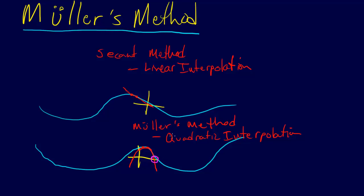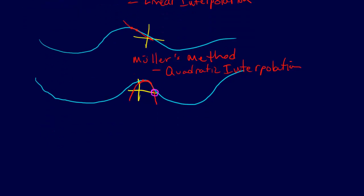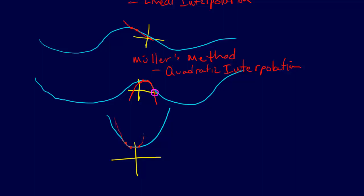So this is Mueller's method, and there's one more thing to emphasize. Let's say we're using Mueller's method and we have some equation here that we're solving, and it looks like this. We can use Mueller's method and we're going to fit a quadratic to this, which is already basically a quadratic. Let's say we fit this quadratic to it.